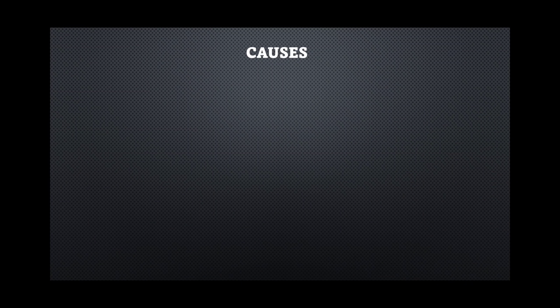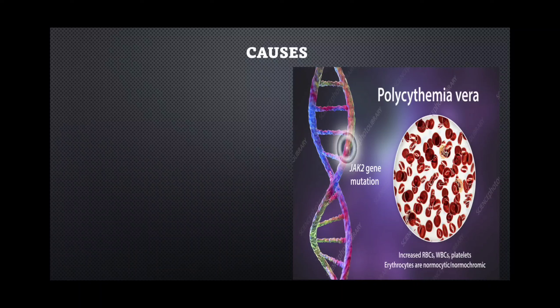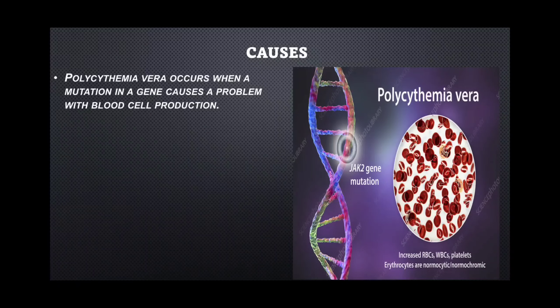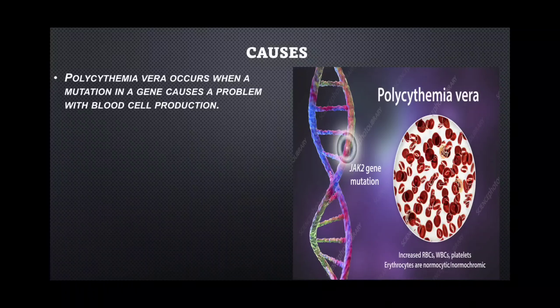Now let's talk about the causes of polycythemia vera. It occurs when a mutation in a gene causes a problem with blood cell production. As we see in this picture, the JAK2 gene mutation in the DNA is the reason for polycythemia vera. Genetic mutation is one of the main reasons for many types of blood cancers — for example, leukemia, thrombocytopenia, and many other diseases are caused due to mutations.